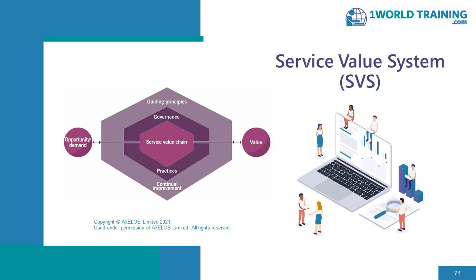Continual improvement is a bit odd because it comes up at multiple different places in the ITIL framework. At the level of the Service Value System, continual improvement represents the culture, the attitudes, and the organizational approach. There is also a continual improvement practice which looks at the four dimensions, the processes, and all of the resources you need. Finally, the service value chain consists of activities in various value streams, and one of those activities is 'improve' — at that stage it's just a thing to do.